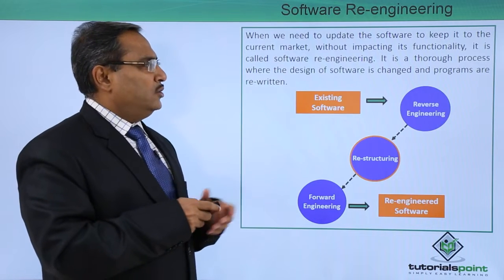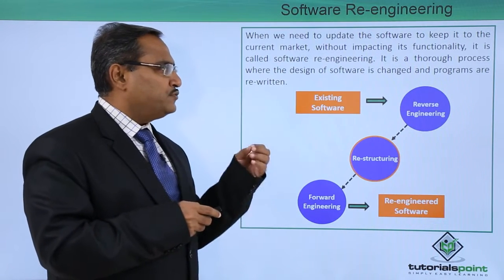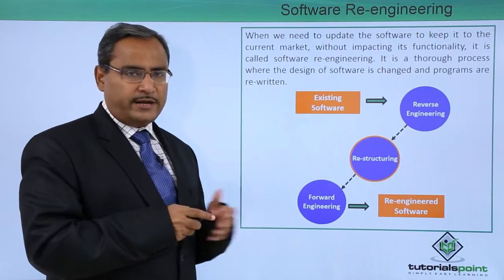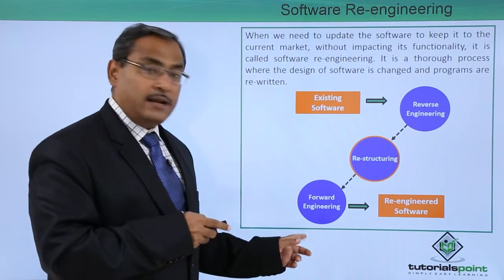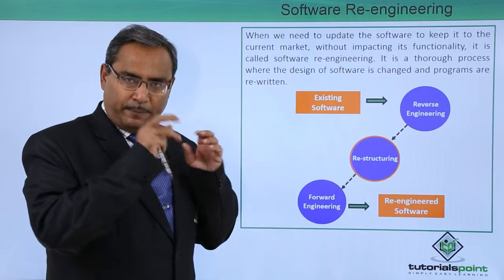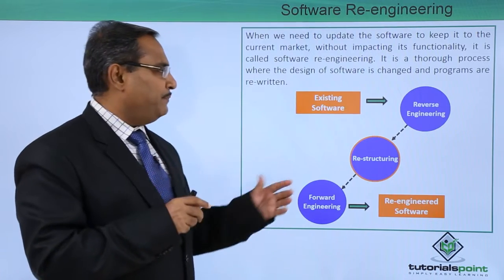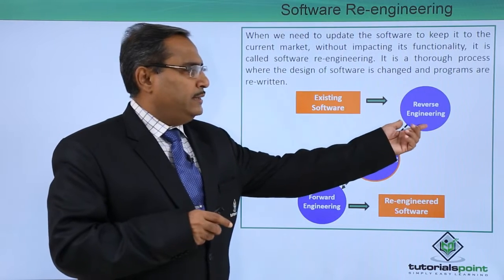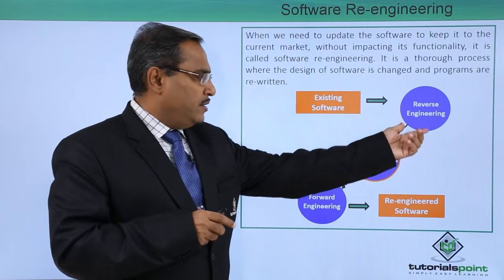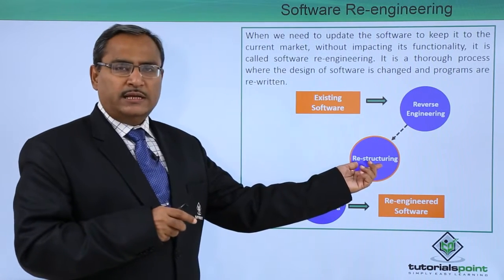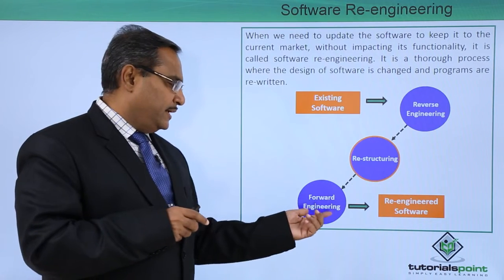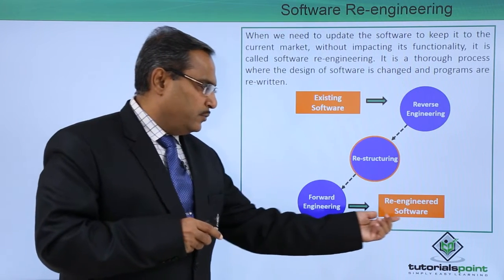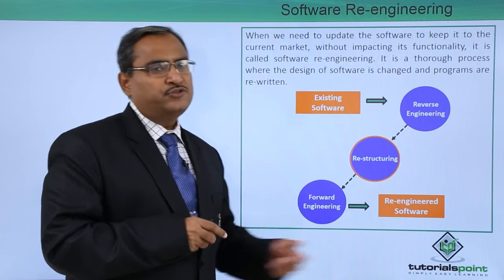It is a thorough process where the design of software is changed and programs get rewritten. This diagram depicts what re-engineering is. We have our existing software, then we perform reverse engineering, then restructuring, then forward engineering, and then we obtain the re-engineered software.